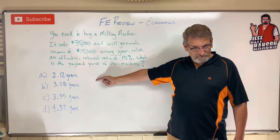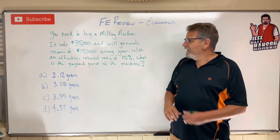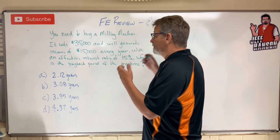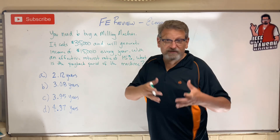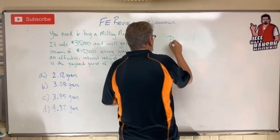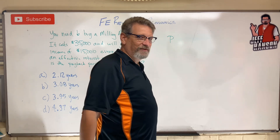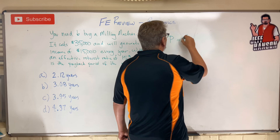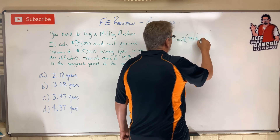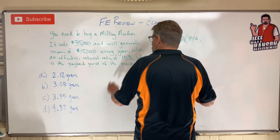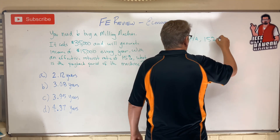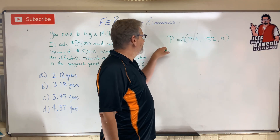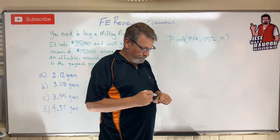Now what do we have here? The $35,000 is what I have to invest today — that's a present cost, that's a P. The $15,000 every year — what is that? That sounds like an A. So there's an A there. This is a P given A kind of problem. The interest rate is 15%. And what I'm trying to find out is how many years — how many years does it take me to get my money back to equal that present value?